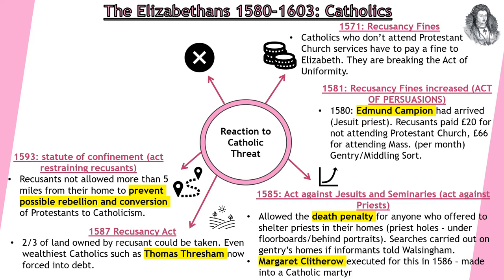In 1593, we have the Statute of Confinement — keeping people within five miles of the home. The purpose of this is to prevent possible rebellion and conversion, keeping track of known Catholics' movements to try and stop them from spreading any more influence.